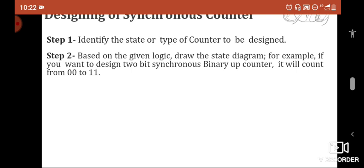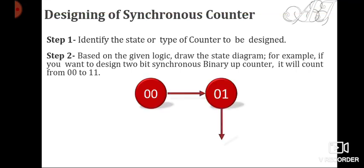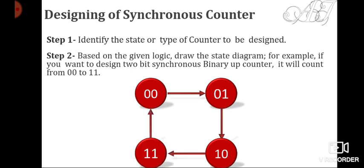The first step is to understand what you are asked to design, and based on that understanding you draw the state diagram. In a state diagram, all the states of the counter are depicted. For a two-bit binary up counter there are four stages: it starts counting from 00, then 01, then 10, then 11, and goes back to 00. You represent these transitions in the diagram — that is the state diagram.